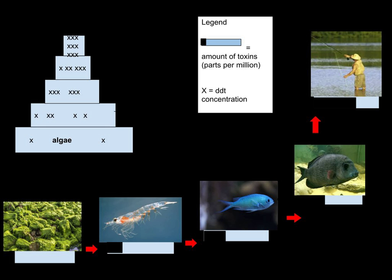Biomagnification, also known as bioamplification or biological magnification, is the increasing concentration of a substance, such as a toxic chemical, in the tissues of tolerant organisms at successively higher levels in a food chain.